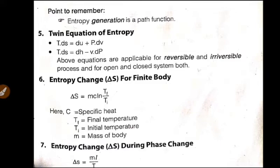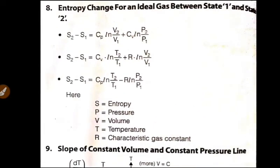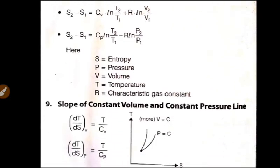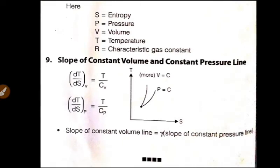So next one, the entropy change for an ideal gas between state 1 and state 2. These three equations are: S2 minus S1 is equal to Cp, that is specific heat of constant pressure, V2 by V1.